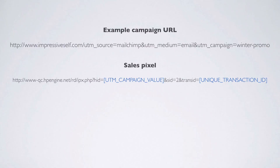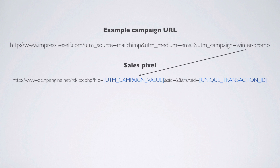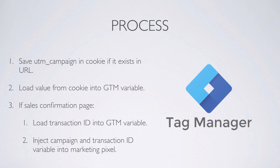Here's an example campaign URL with the UTM source, medium, and campaign parameters we all know and love. The challenge in this tutorial is how do we get that UTM campaign parameter into a marketing pixel which may not be on the landing page — so this may be sometime later in the session when the UTM campaign parameter is no longer available in the URL. How can we inject it into our sales pixel? The second part of this tutorial is about picking up the transaction ID, which is sometimes needed in a sales confirmation pixel too.